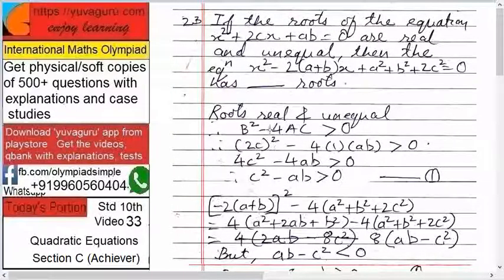Therefore, b squared minus 4ac will be greater than 0. Right? If they are equal, then equals to 0. Therefore, let's see this. Now, what is b over here? 2c. 2c squared minus 4 into a is 1 and c is ab. So, 2c the whole square minus 4ab equals to greater than 0. Therefore, 4c squared minus 4ab greater than 0. Therefore, c squared minus ab greater than 0. Okay? This much is clear?